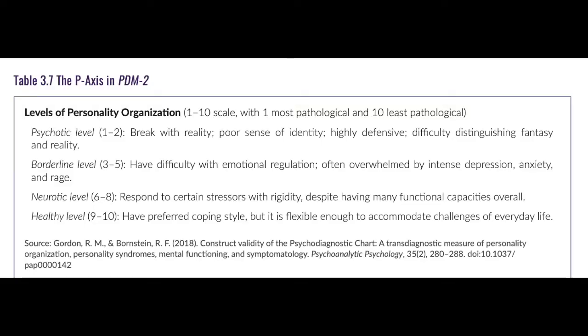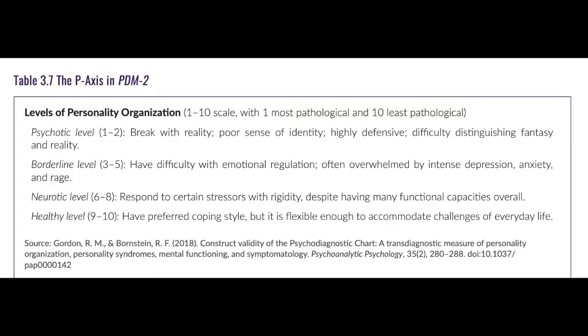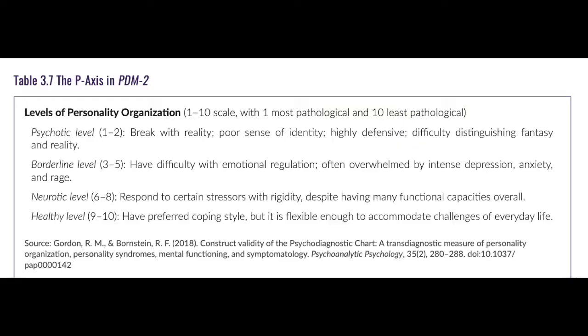At the neurotic level, a score of 6 to 8, a person responds to certain stressors with a degree of rigidity, though they have pretty good overall functioning. The borderline level, a score of 3 to 5, is identified in people who have difficulty with emotional regulation — situations often overwhelm them, and they report intense experiences of depression, anxiety, or rage. The psychotic level, a score of 1 to 2, involves a break with reality or a very poor sense of identity, with difficulty distinguishing fantasy from reality.